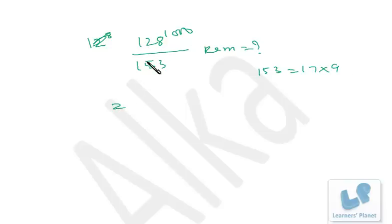First of all, I'll be finding out the remainder from 17, then from 9. So 2 raised to 7000 can be written as 16 raised to 1750, right?